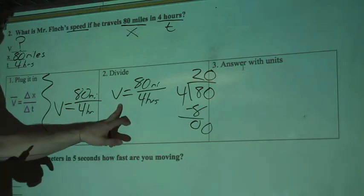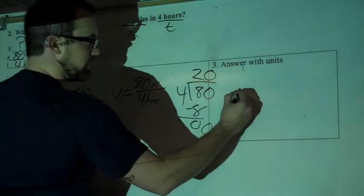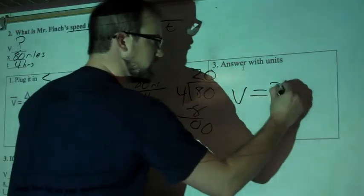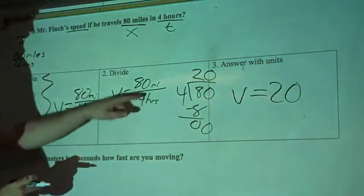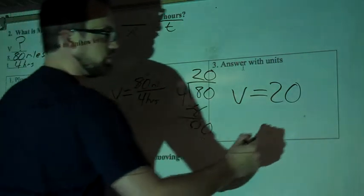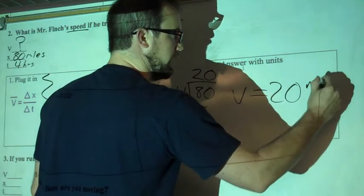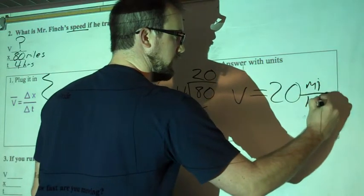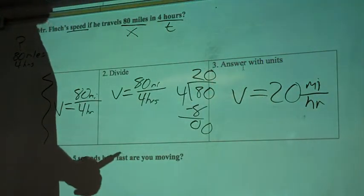We were solving for velocity. So I'm going to rewrite over here, answer with units. V equals, and it's 20. And my units that I had were miles over hours. So I'm going to have 20 miles per hour. That's it.